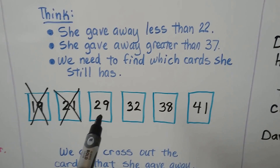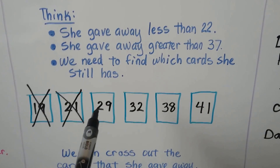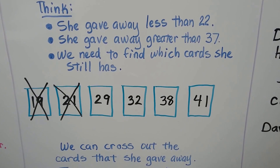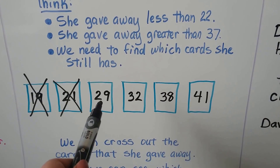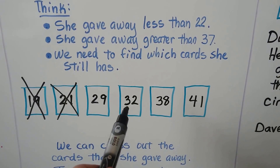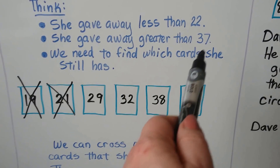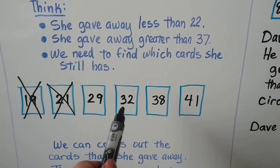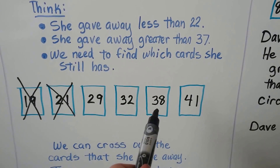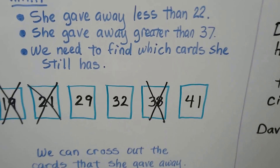Is 29 smaller than 22? It has nine ones and 22 has two ones, so that's not smaller. She also gave away cards greater than 37. Is 29 greater than 37? No — it's only got two tens, it's not greater. How about 32? Is that greater than 37? They both have three tens, but 32 only has two ones and 37 has seven ones, so no. So she didn't give 32 away. Is 38 greater than 37? It has eight ones and 37 has seven ones — yes, so she gave the 38 away.